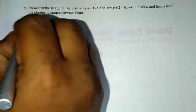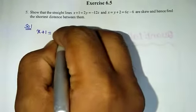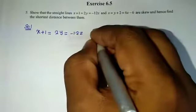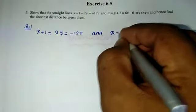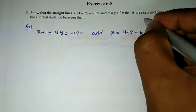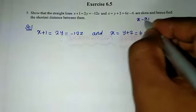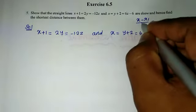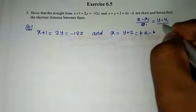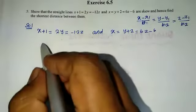For two lines in Cartesian form, we will prove they are skew lines and find the distance. The given lines are: x plus 1 equal to 2y equal to minus 12z, and x equal to y plus 2 equal to 6z minus 6. The standard Cartesian form is: x minus x1 over b1 equal to y minus y1 over b2 equal to z minus z1 over b3. Let's compare to this.